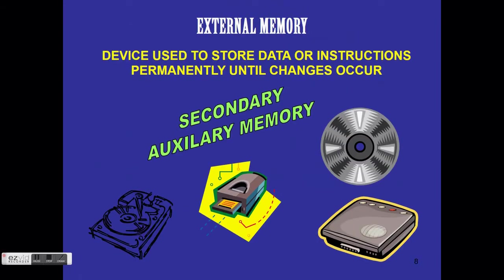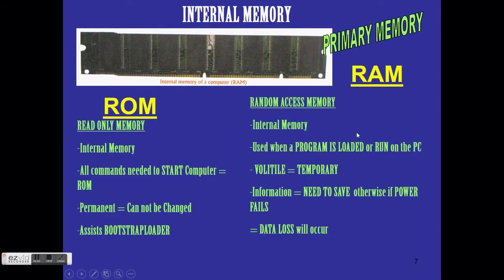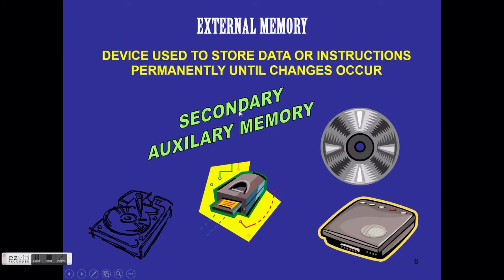External memory is storage located outside of the computer — a device used to store data or instructions permanently until a change occurs. External memory is also called secondary or auxiliary memory. Primary memory is inside the computer; secondary is outside. Examples include external hard disks, optical disks such as DVDs and CDs, USB flash disks, and your internal hard drive.